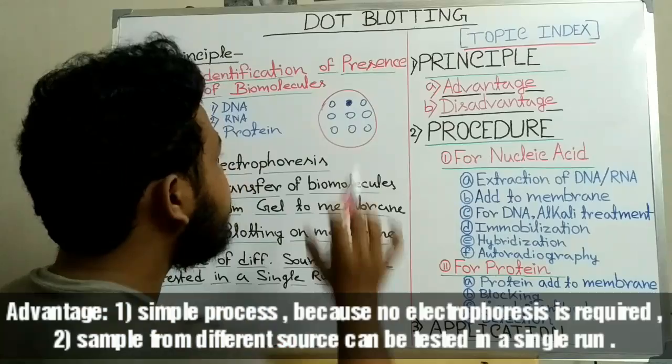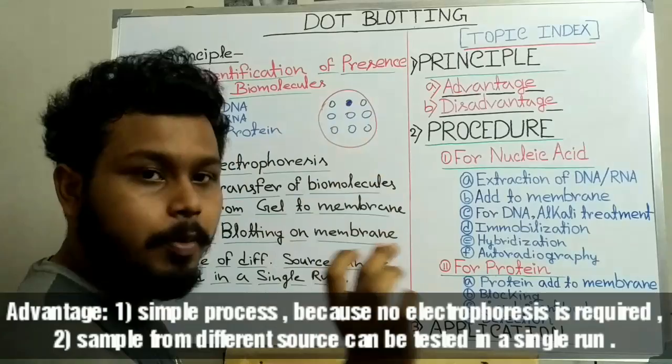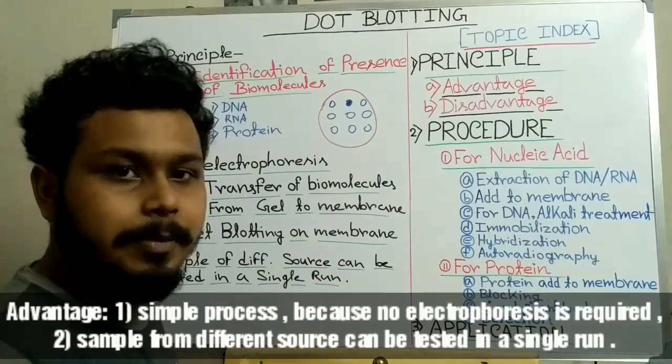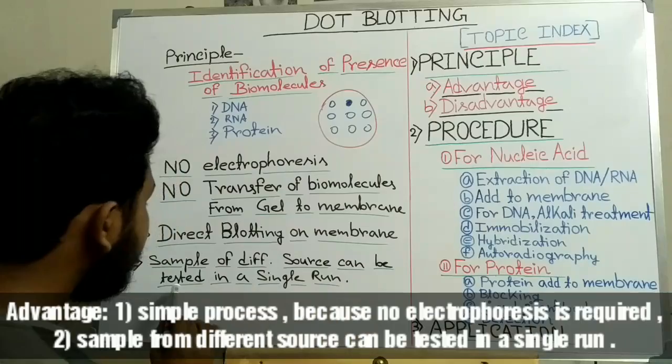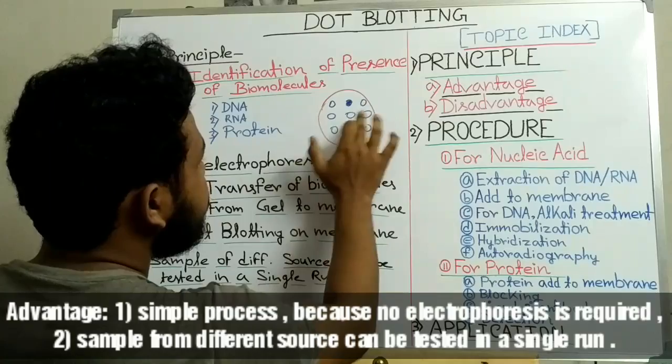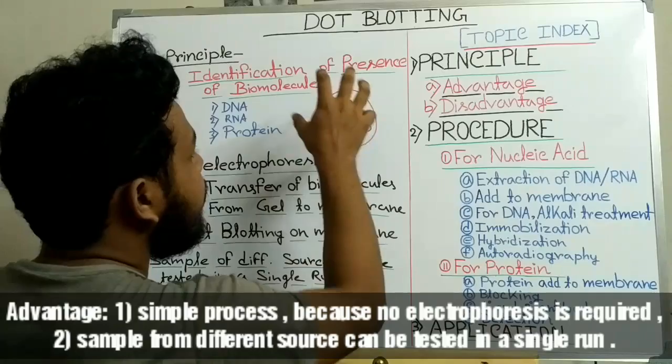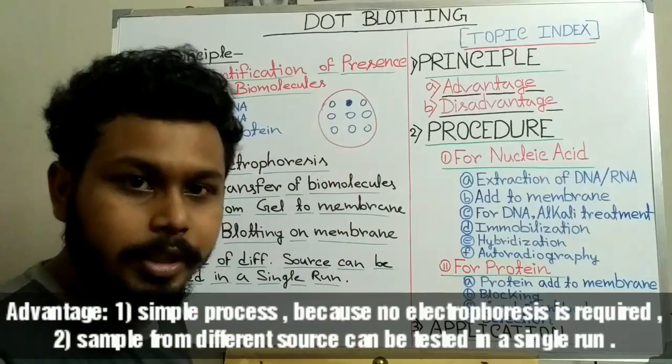We can visualize this colored product and interpret the presence of the target protein in the sample. This is the main principle of dot blotting. Another advantage of dot blot is that samples from different sources can be tested in a single run — that means different samples coming from different sources can be tested in a single procedure of dot blotting.